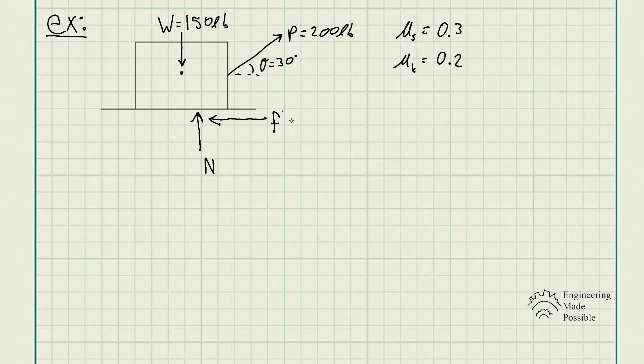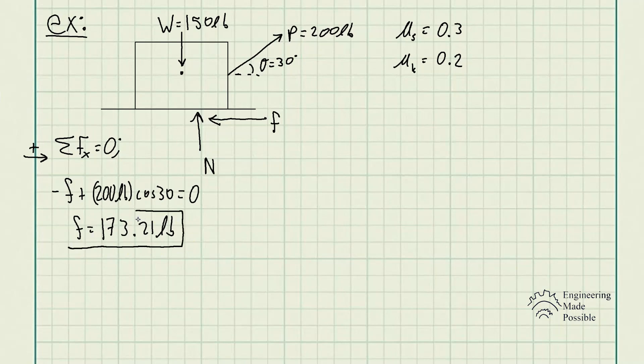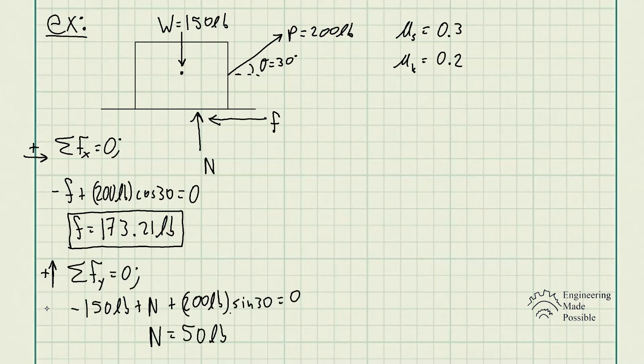Let's solve for the frictional force first. Doing the sum of forces along the x direction, we get the frictional force at the surface being 173.21 pounds. Now solving for the normal force using the sum of forces along the y direction, the normal force equals 50 pounds.